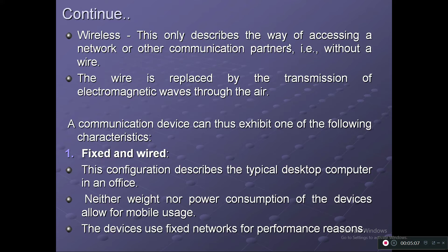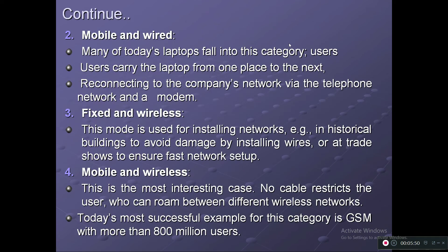A communication device can exhibit one of the following characteristics. First is a fixed and wired configuration, which describes a typical desktop computer in an office — neither its weight nor its power consumption allows for mobile usage, so it uses fixed networks for performance reasons. The second category is mobile and wired — many of today's laptops fall into this category.